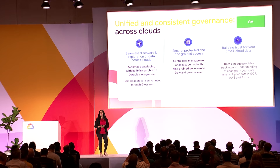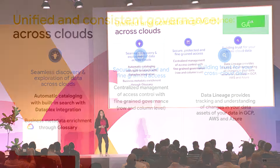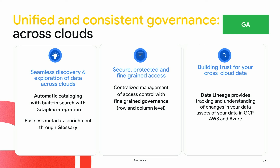BigQuery Omni integrates deeply with Dataplex, our governance platform. Through integration with Data Catalog, you're able to search, discover, and explore your datasets. Through Glossary, you're able to enrich your business metadata. You're also able to get row-level access, column-level access, and data masking for BigQuery Omni tables. With BigQuery Omni support for data lineage, you're able to access the flow of your data — not just for GCP datasets, but for AWS and Azure datasets as well. That's unified and consistent governance across all three cloud platforms.